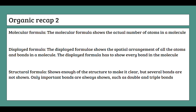Next we have the displayed formula, which shows the spatial arrangement of all atoms and bonds in a molecule. The displayed formula has to show every single bond — even within a CH₃ group, every bond between carbon and hydrogen must be shown. Finally, the structural formula is similar but unlike the displayed formula we don't need to show every single bond; only the important bonds such as double or triple bonds are always shown.